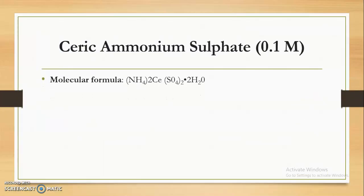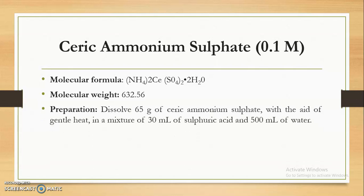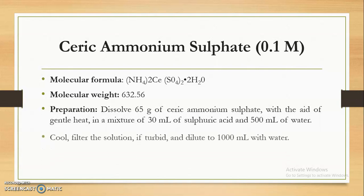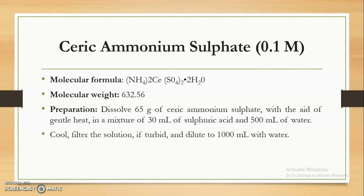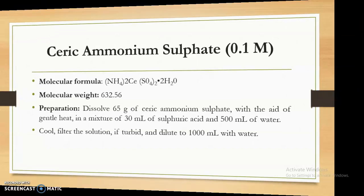Next, we discuss Ceric Ammonium Sulphate. Molecular formula: (NH4)2Ce(SO4)3·2H2O, molecular weight: 632.56. For preparation: dissolve 65 grams of ceric ammonium sulphate with gentle heating in a mixture of 30 ml of sulphuric acid and 500 ml of water. Cool, filter if turbid, and dilute to 1000 ml with water.